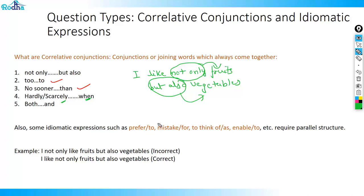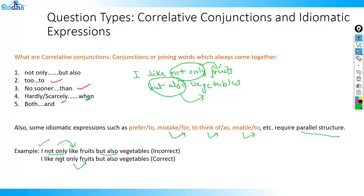Also ensure that idiomatic expressions are used correctly. 'Prefer' always takes 'to' — you say 'I prefer coffee to tea,' not 'coffee than tea' or 'coffee over tea.' For 'mistake,' you use 'for'; 'think' uses 'of' or 'as'; 'enable' uses 'to.' These expressions always require a parallel structure — meaning they have a set pattern for which preposition follows. For example, 'I not only like fruits but also vegetables' is wrong because 'not only' modifies 'like,' whereas it should modify 'fruits.' Always ensure conjunctions modify the right noun.